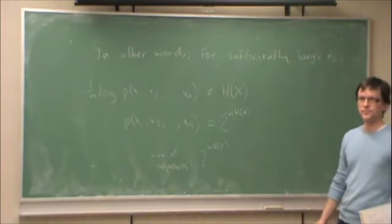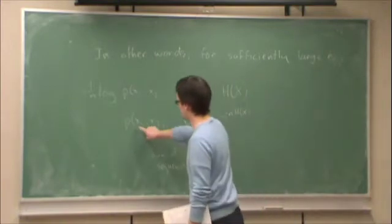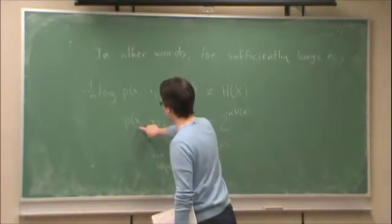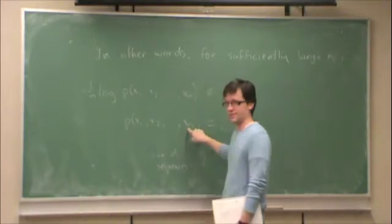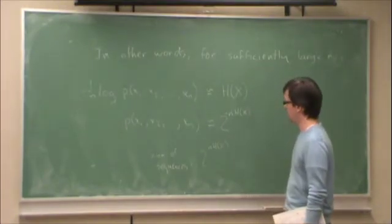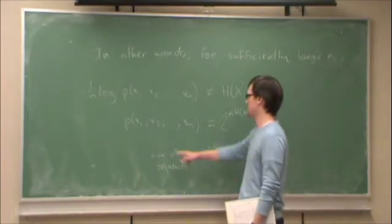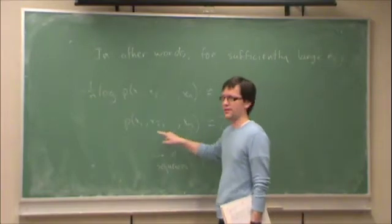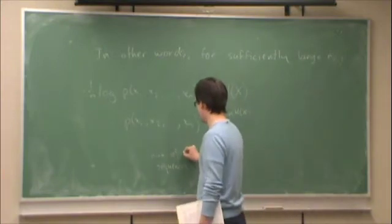Could you clarify, which number of sequences is this? So, this is the number of sequences of... The number of possible sequences of x1, x2, up to xn. So these are random variables, a sequence of random variables. What I'm saying is that, okay, the number of all possible sequences is clearly cardinality of x to the n.